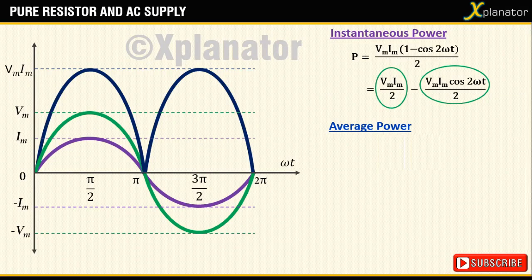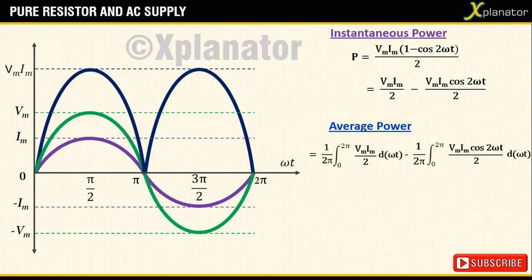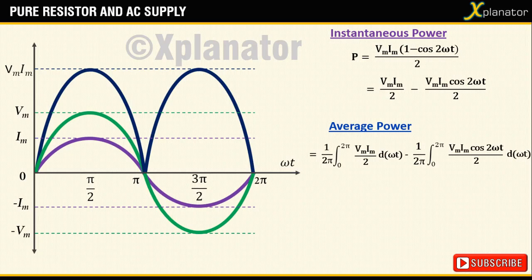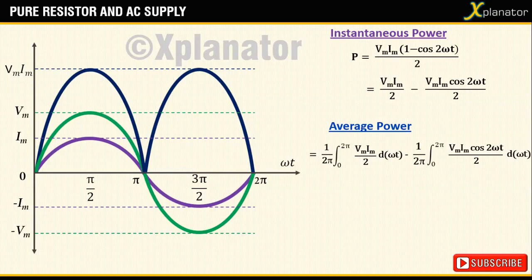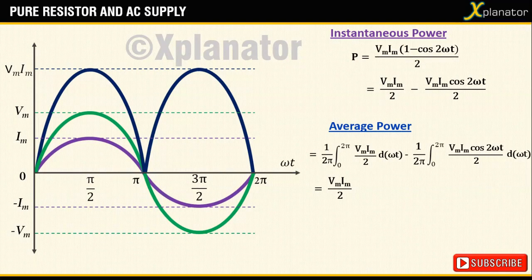For average power, take the equation for instantaneous power and integrate it over the cycle 0 to 2 pi with respect to d omega t, and then divide it by the total time period which is 2 pi. The first integral will give a value of vm im by 2, while the second term which has cosine in it will return 0.